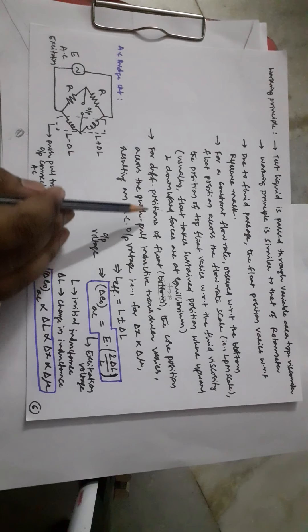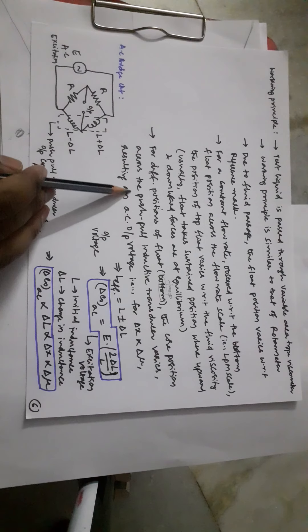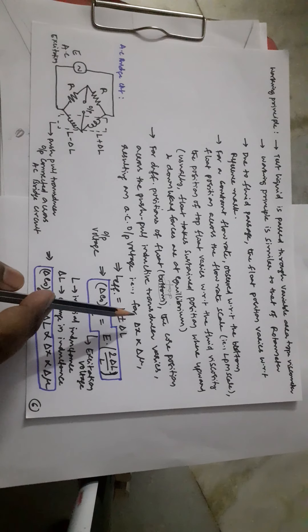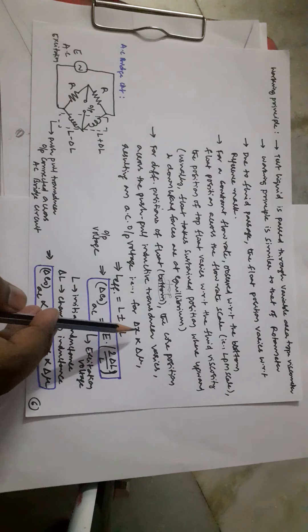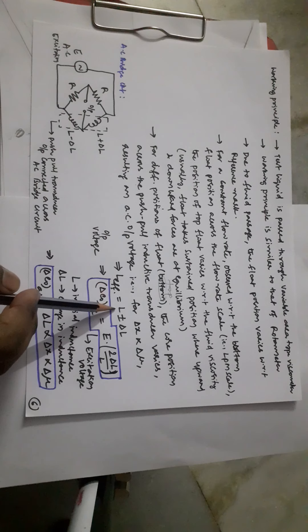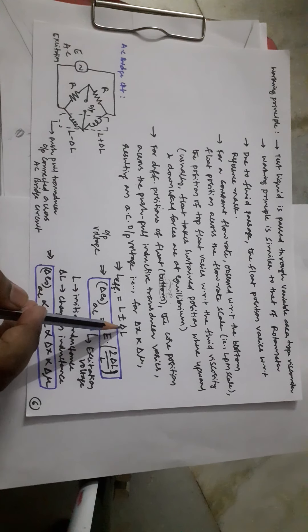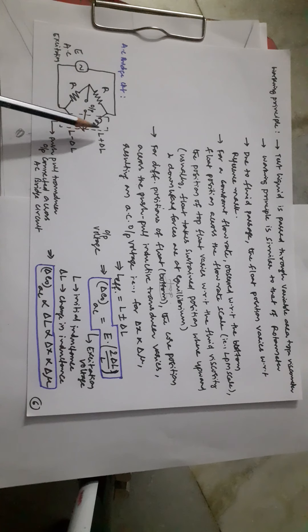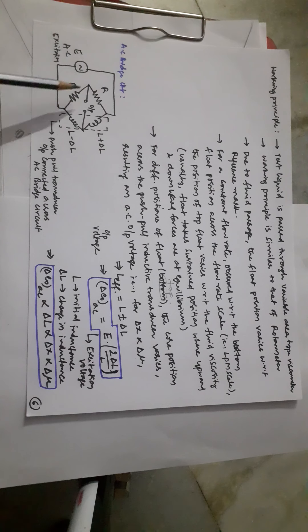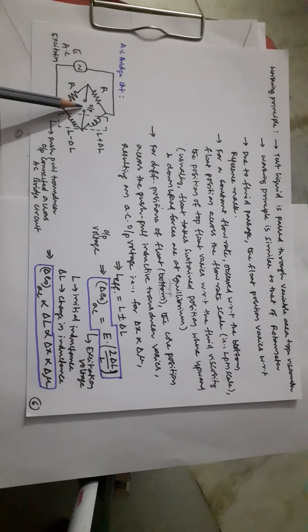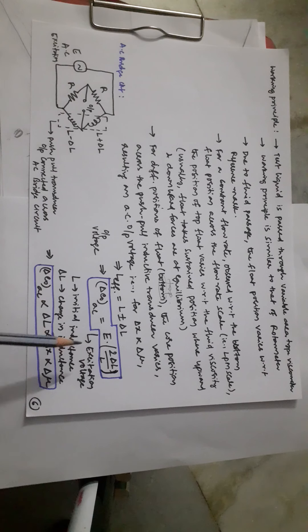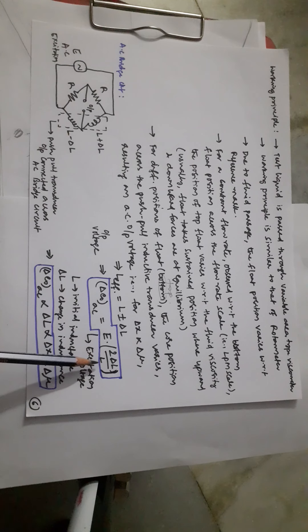For different positions of the top float, the core position across the push-pull inductive transducer varies, resulting in AC output voltage, where delta x is proportional to delta mu. For a given input viscosity, the displacement of the top float changes, so L_effective changes as L + delta L or L − delta L. These two arms of the AC bridge circuit, with the other two arms as fixed resistors and standard AC excitation, give an AC output voltage delta E₀ AC.